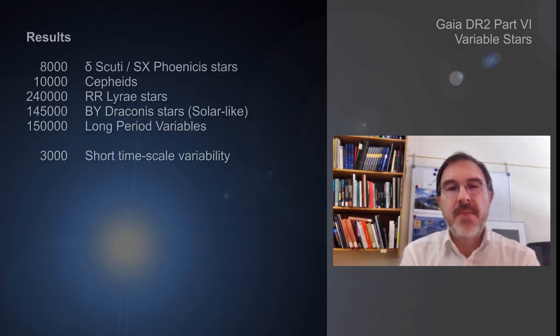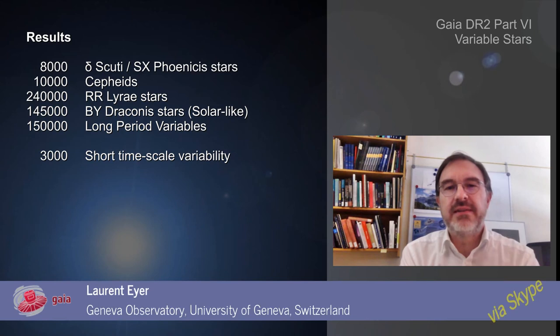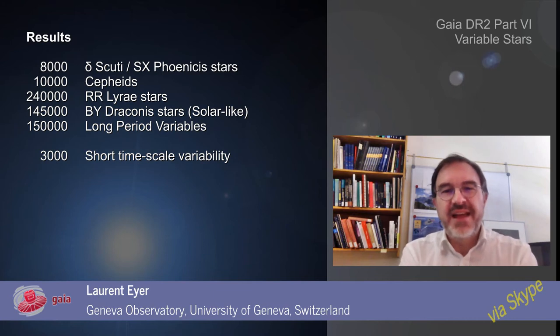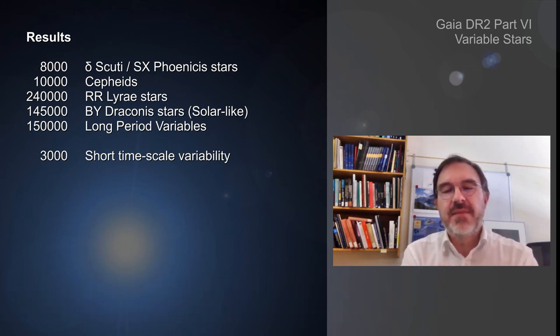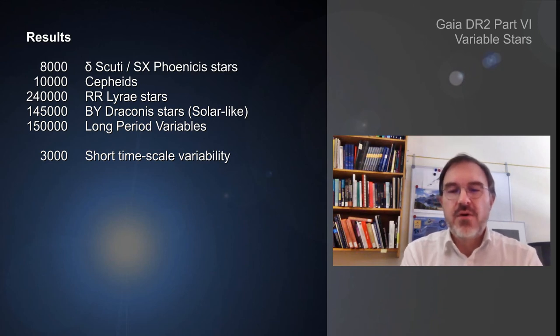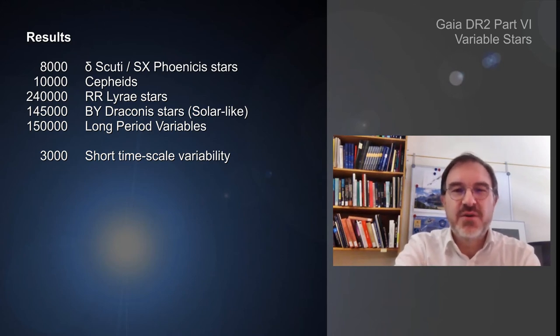For the results, we have about 8,000 Delta Scuti and SX Phoenicis stars, 10,000 Cepheids, 240,000 RR Lyrae, 145,000 RV Tauri stars, 150,000 long period variables, and 3,000 short time scale variability phenomena. These catalogues are among the largest known in the literature.